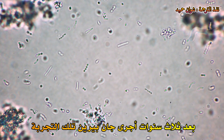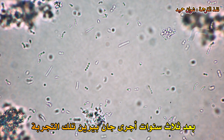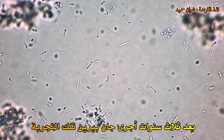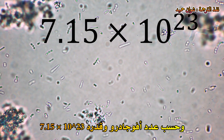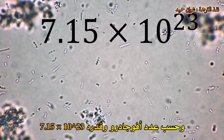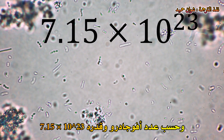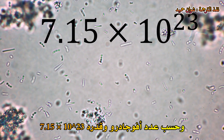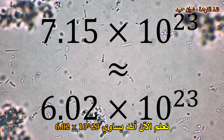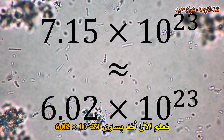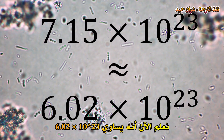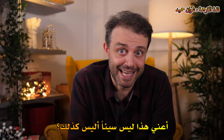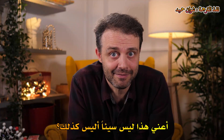Three years later, Jean Perrin actually conducted that experiment and calculated Avogadro's number to be 7.15 times 10 to the 23. We now know it to be 6.02 times 10 to the 23. That's not bad, is it?